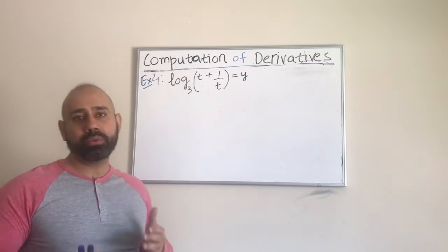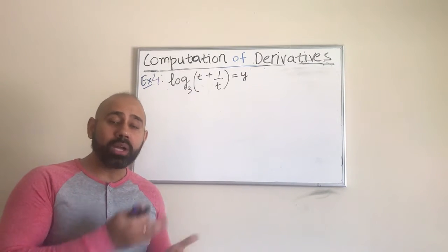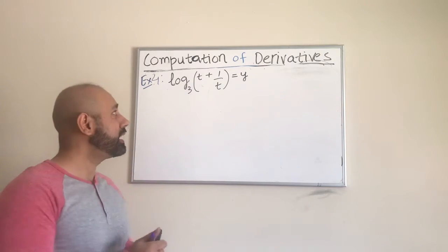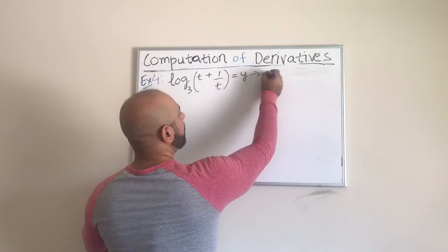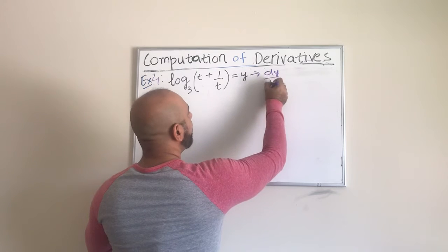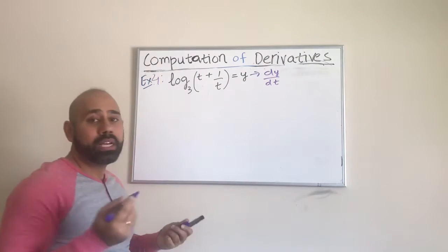Obviously, it is in terms of t. So it would be finding the derivative of y or this function with respect to t. It would be more like finding dy over dt, not dx anymore because the function is in terms of t.